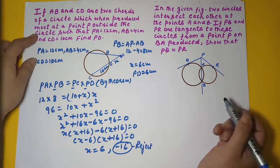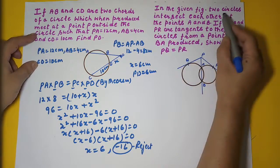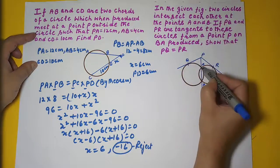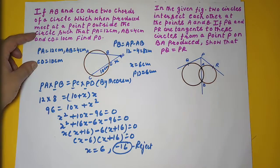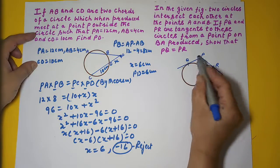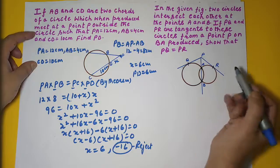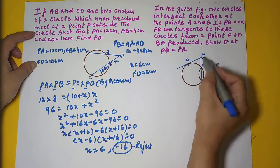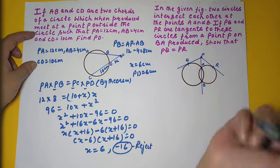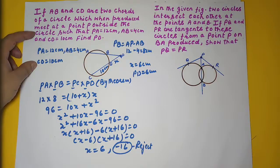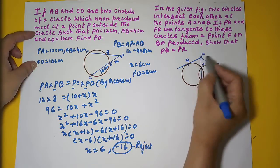Now another problem. Two circles intersect each other at points A and B. PQ and PR are tangents to these circles, with points of contact Q and R, from a point P on BA produced. We need to show that PQ = PR.